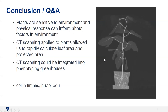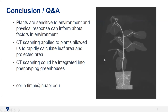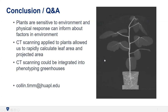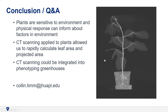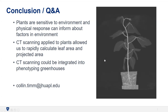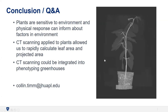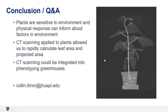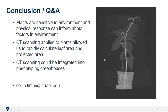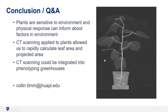In conclusion, plants are sensitive to their environment, and their physical response can tell us a lot about what's happening — not just for agriculture, but for wild plants as well. CT scanning enabled rapid phenotyping and calculation of leaf area and projected area, both considered interesting metrics. Ultimately, it would be valuable to place a medical-grade CT scanner in the assembly line of a phenotyping greenhouse to continuously scan plants and gather data over time.